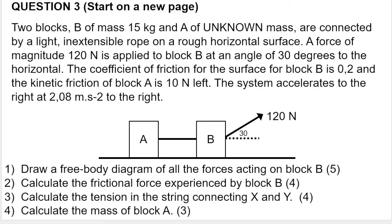In this question, we are going to look at Newton's second law in terms of two objects connected by a rope or a string. Our system consists of two separate objects, but they are connected. We've got two blocks: B of mass 15 kilograms and A of unknown mass. They're connected by a light inextensible rope on a rough horizontal surface.